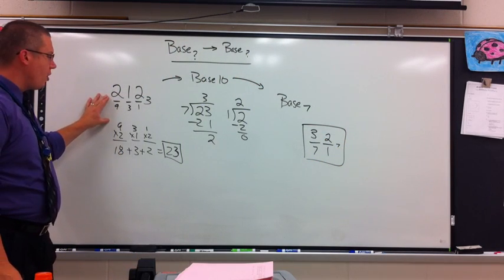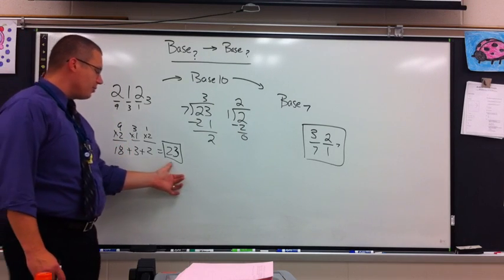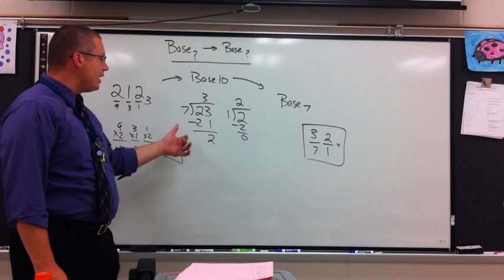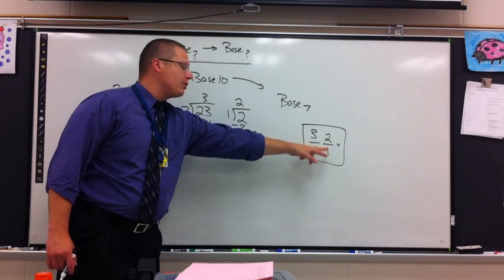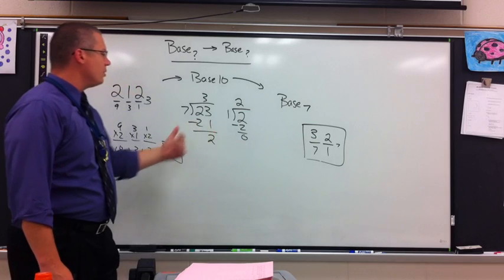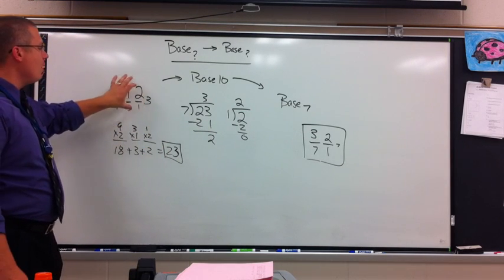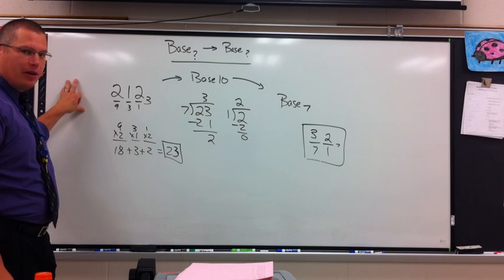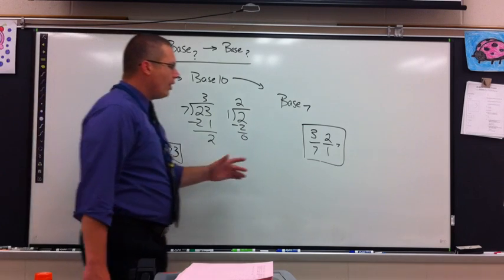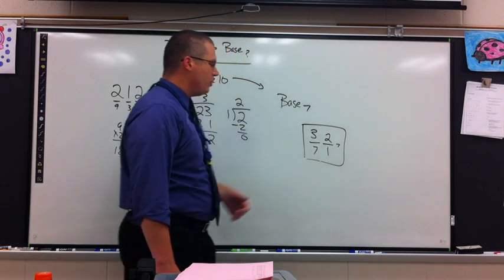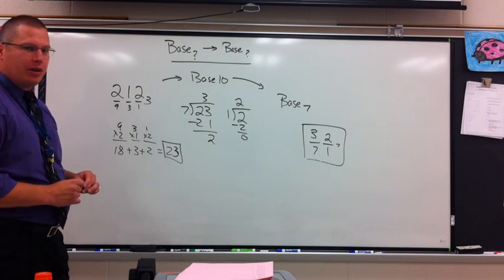So take your initial starting point, multiply out place values times digits, add up to get your sum. Your sum is your base 10 number. Take your base 10 number, divide it out by your outgoing base's place values. What you'll notice is the smaller the base, the more digits you'll need to represent a value. The higher the base, the less space you need. This is converting one base to another base. Good luck.